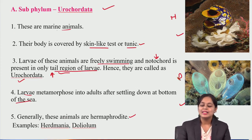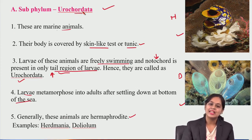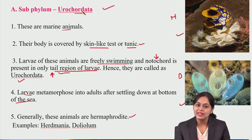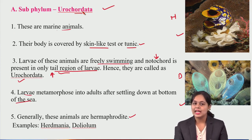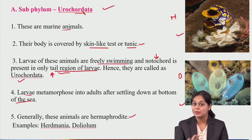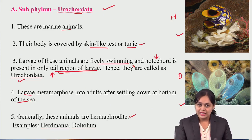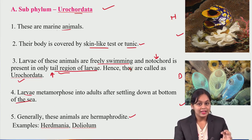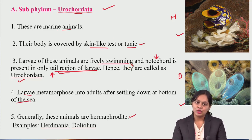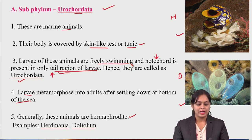Examples of Urochordata are Herdmania and Doliolum. These are very colorful and good-looking urochordates. In their larval tail region, you can find the notochord. The skin-like tunic or test is present. Larvae are freely swimming, and adults are sessile. They are hermaphrodites.